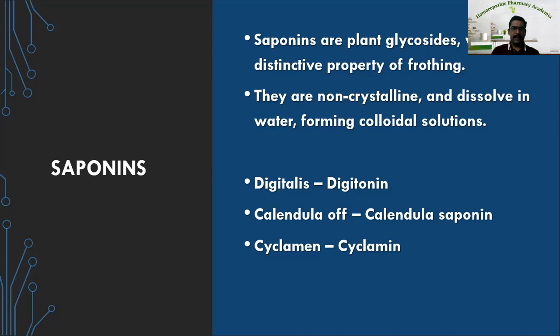Examples of saponins: digitonin from Digitalis, calendula saponin from Calendula officinalis, and cyclamen from Cyclamen officinalis.